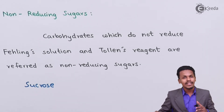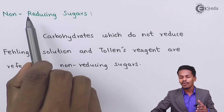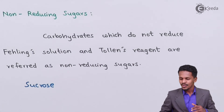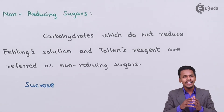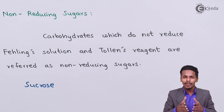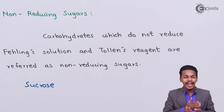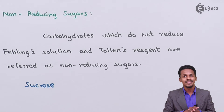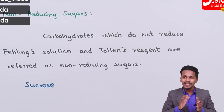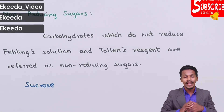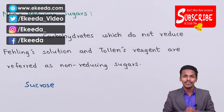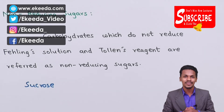So this was another classification of carbohydrates based on reducing power for Tollens' reagent and Fehling's solution. Thank you friends for watching this video. I hope you have got an idea about this classification, and I hope to see you next time. Till then, don't forget to subscribe to the Ikeda channel. Thank you so much.